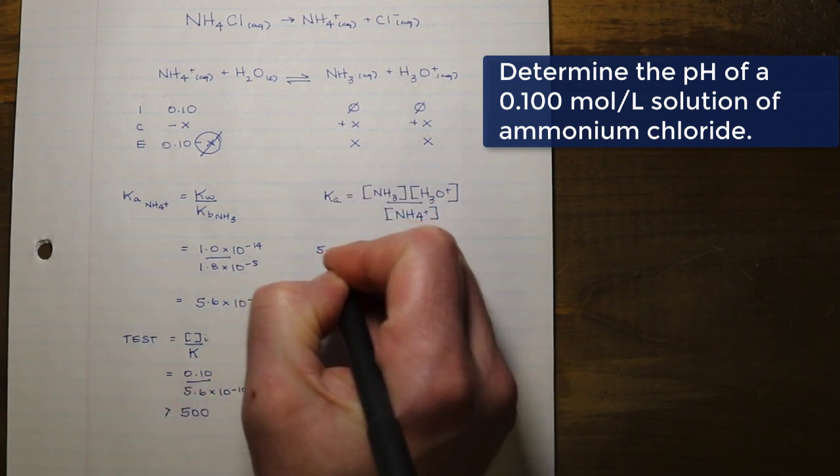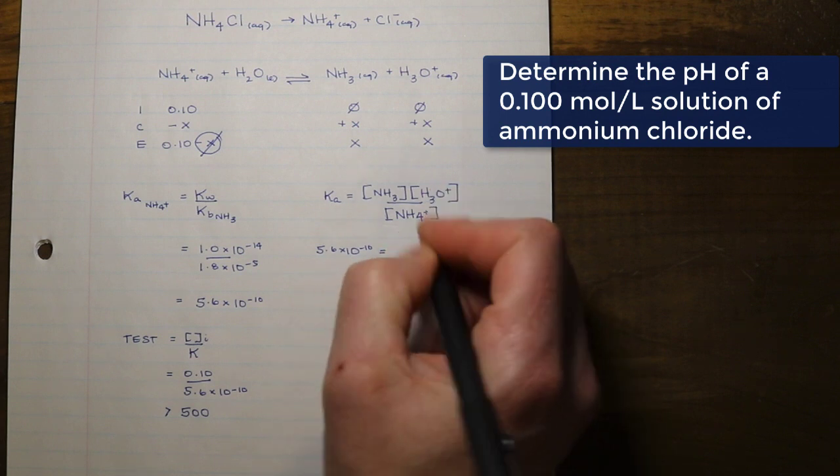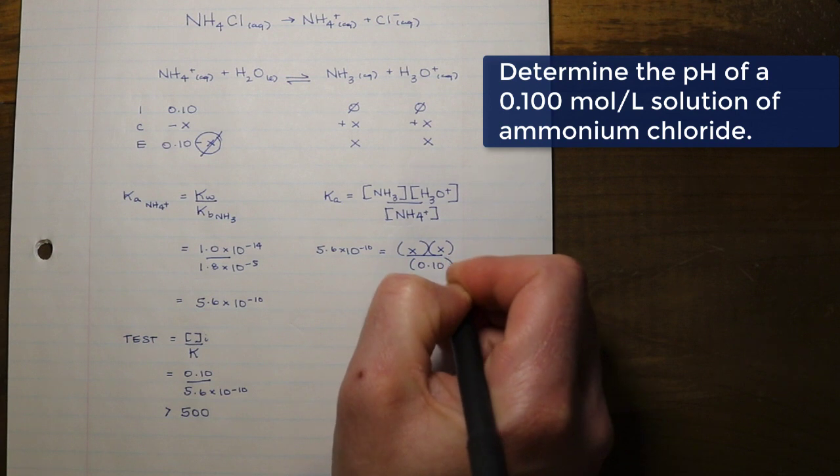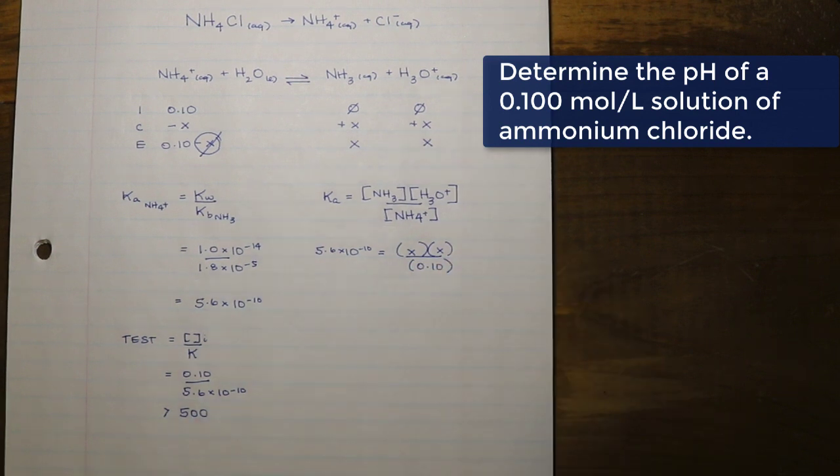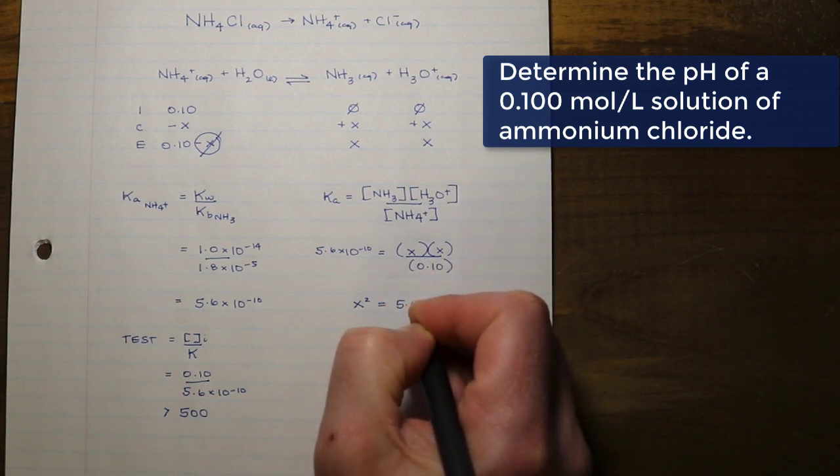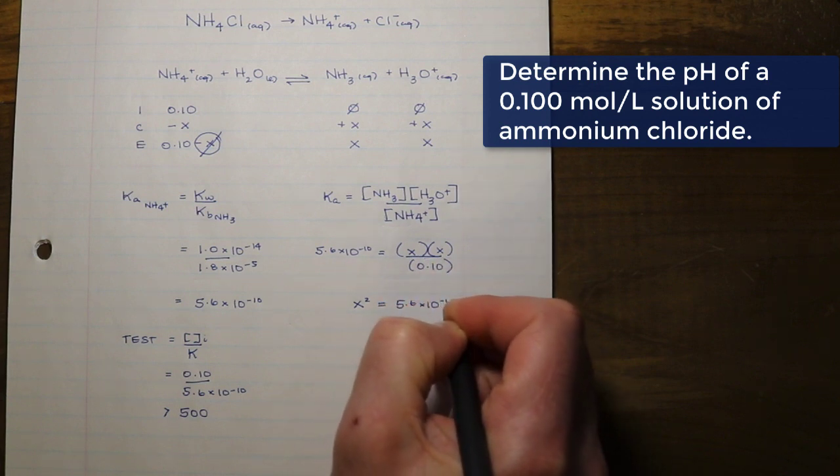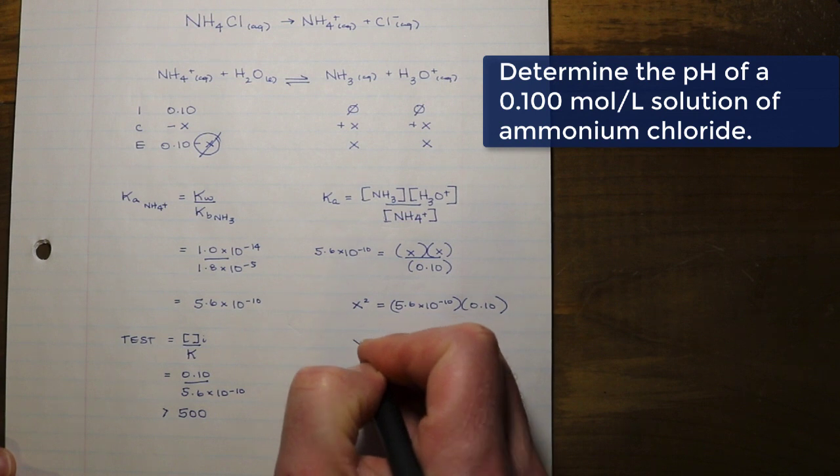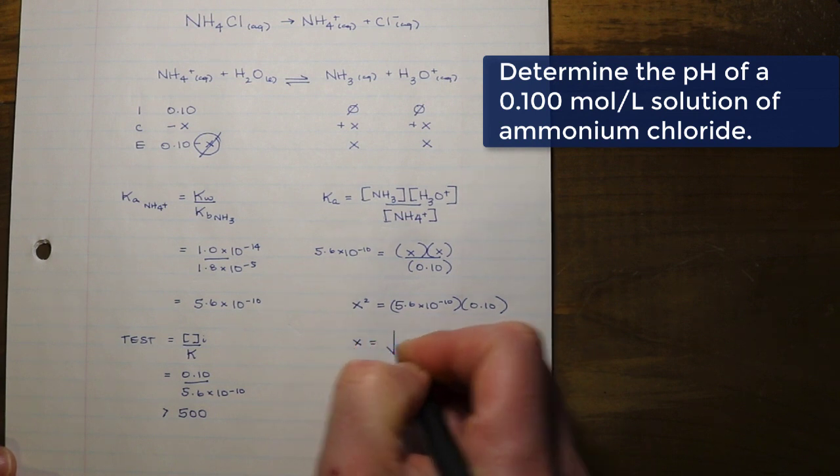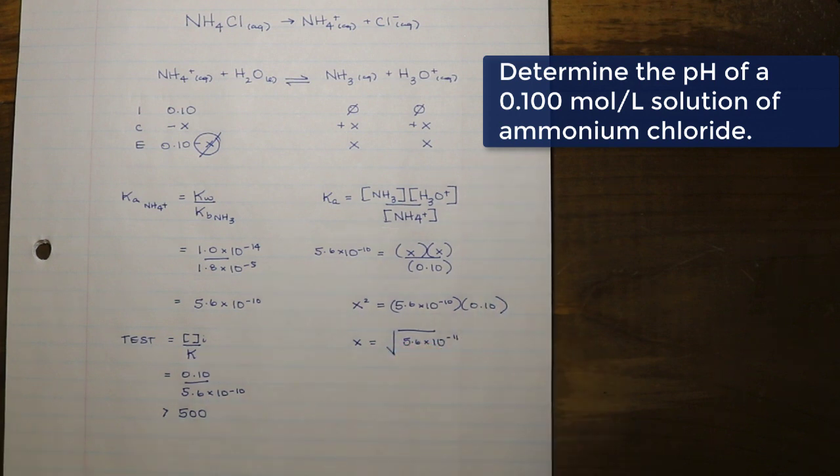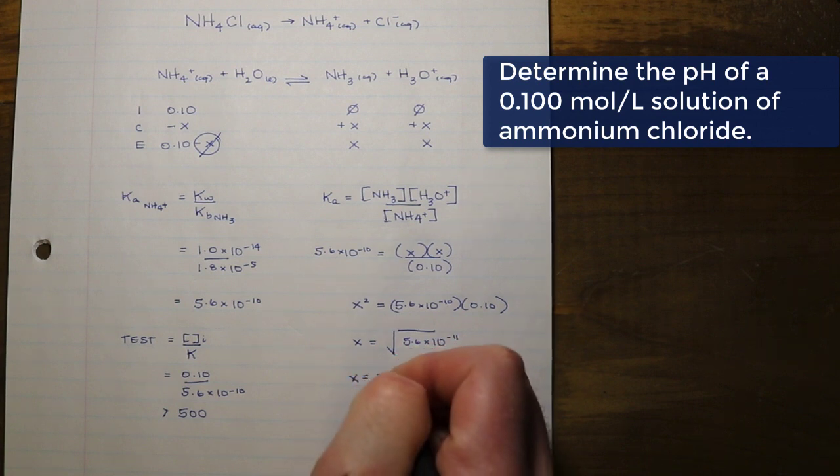We can see that our product values are both going to be x, divided by the reactant value 0.10. Again it's not appreciably going to change, our x value is going to be extremely small, and then we have the Ka that we've just calculated in there as well. Now I'm going to simplify this, solving for x squared. I like to move my variables I'm looking for to the left side of the equal sign, and then I am going to take the product of the Ka and the initial concentration, and ultimately to solve this I'm going to have to take the square root of that value. And in doing so, I'm going to get a value for x of 7.5 times 10 to the negative 6.